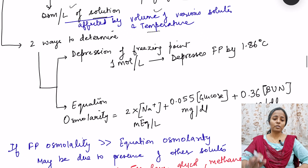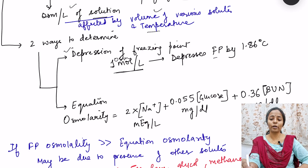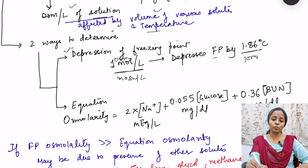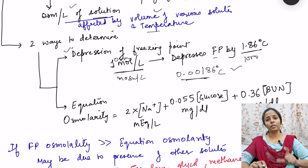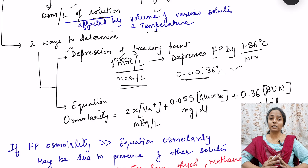There are two ways to determine osmolality. The first is the depression of freezing point: one osmole per liter causes a freezing point depression of 1.86°C. For body fluids, solutes are in milliosmoles, so one milliosmole per liter causes a depression of 0.00186°C. By measuring the depression of the freezing point of the solution, we can determine how many milliosmoles are present and hence determine the osmolarity.